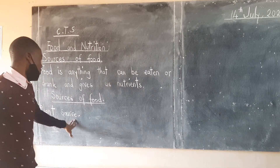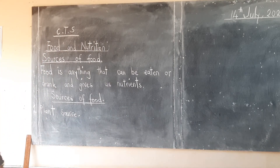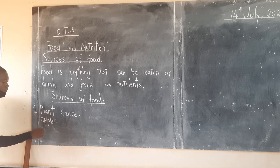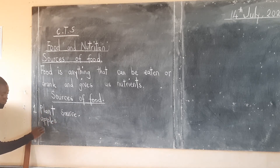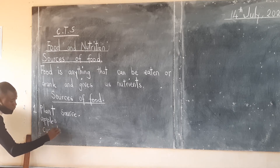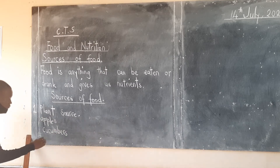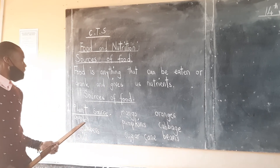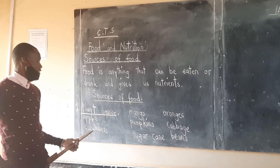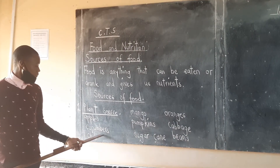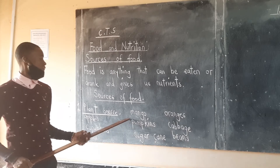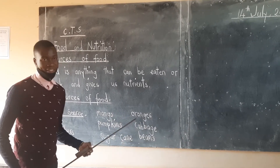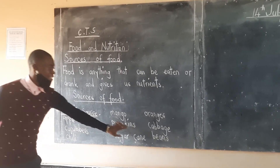These are some of the foods that we can get from plants. The first one, we have apples, cucumbers, chili, mango, pumpkins, sugar cane, oranges, cabbage, and beans. So under plant sources, we have these foods.